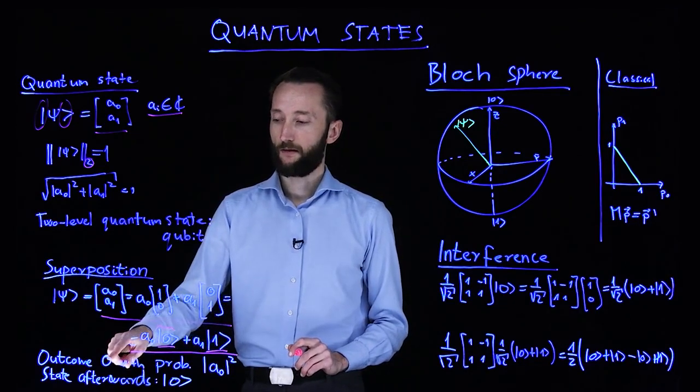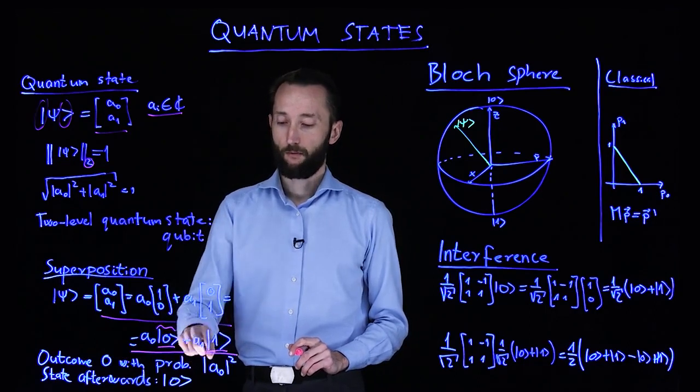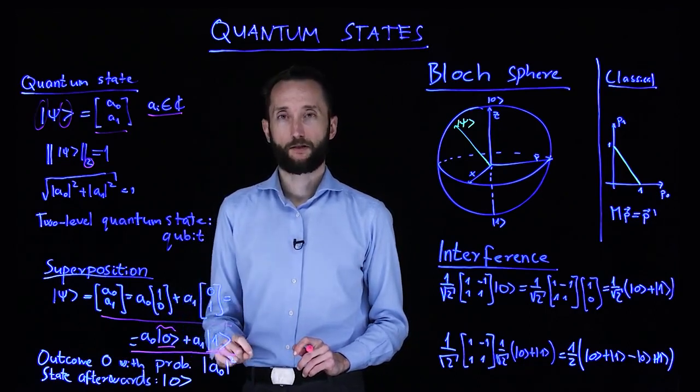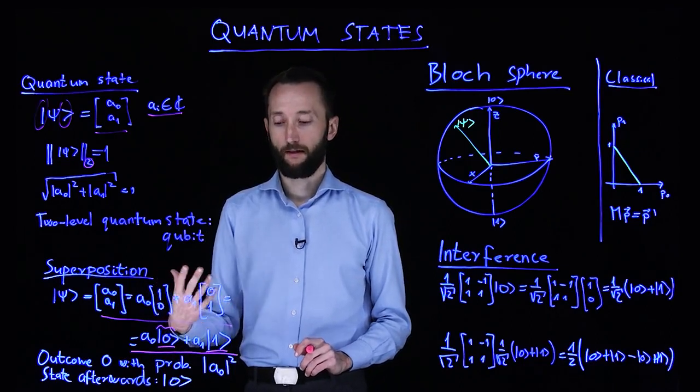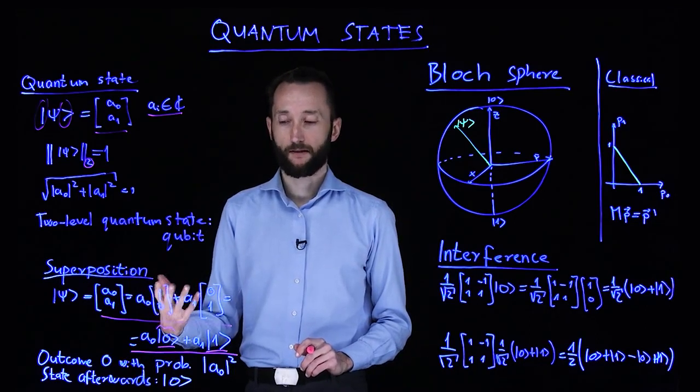So for instance, you get the outcome zero with probability |a0|². And similarly, the outcome one with probability of the absolute value of a1 squared.